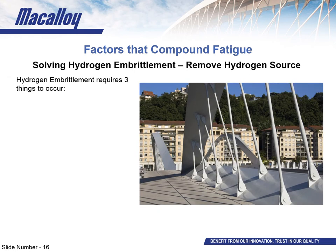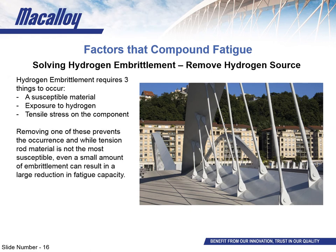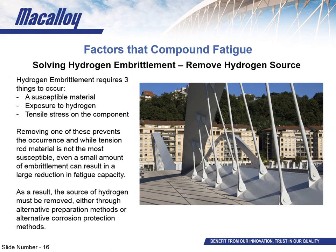For hydrogen embrittlement to occur, three things must be present: a susceptible material, hydrogen introduced into the steel, and a tensile stress on the system — much like the fire triangle, where removing one of the three prerequisites prevents it from happening. The whole point of the system is to be used in tension, so you can't remove the tensile stress, and changing the material changes the entire dynamic. So removing the source of hydrogen is always the best bet. Even if the material isn't generally considered susceptible to hydrogen embrittlement — which is actually the case for our tension rods — even the smallest amount of embrittlement can increase the likelihood of cracking and reduce fatigue life.